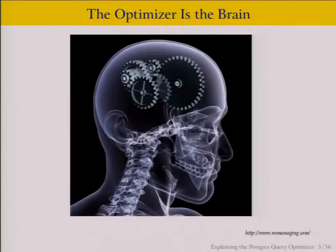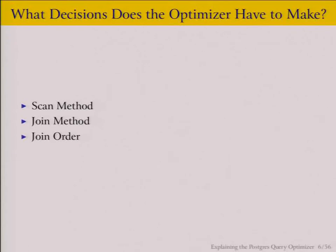We're going to focus on the optimizer — the brains of the system. There are three major areas it has to make decisions on: first, the scan method used to get at the data; second, what join methods to use; and third, join order — figuring out whether to join table A to B then C, or B and C then A. These are very generic relational concepts that apply to most relational systems.